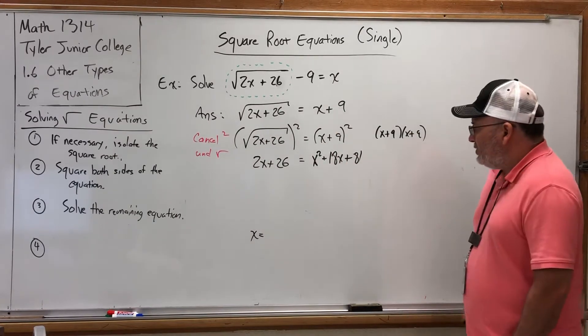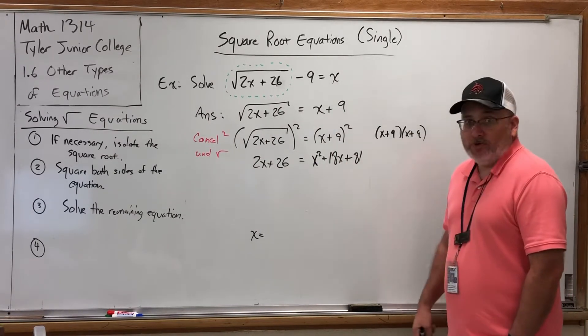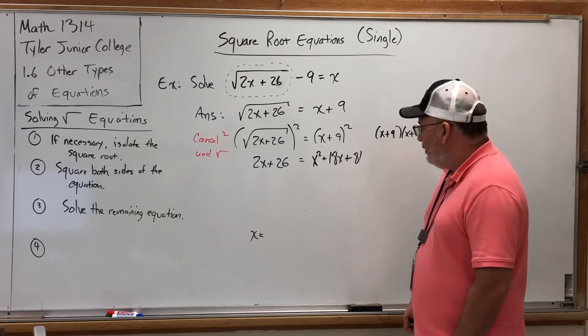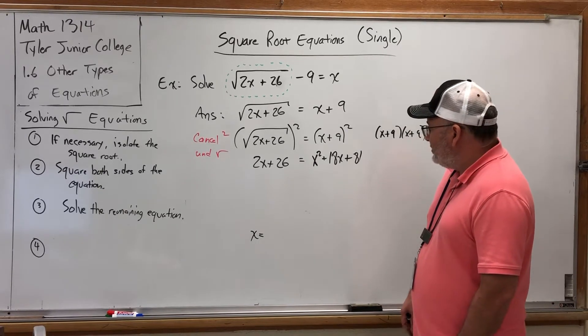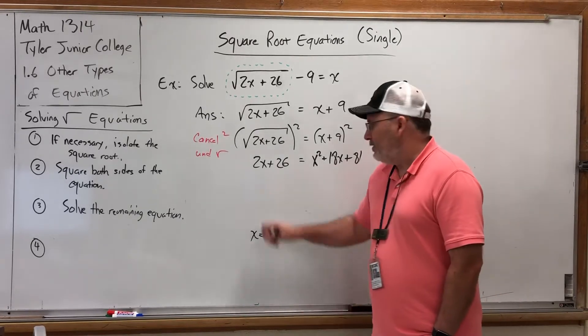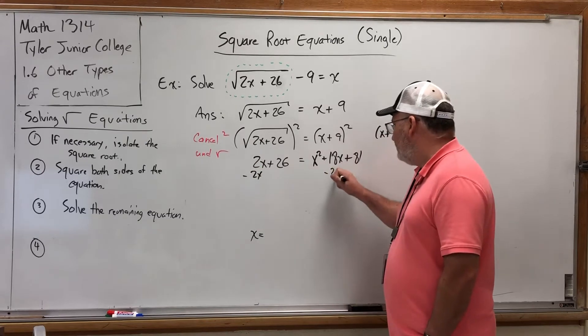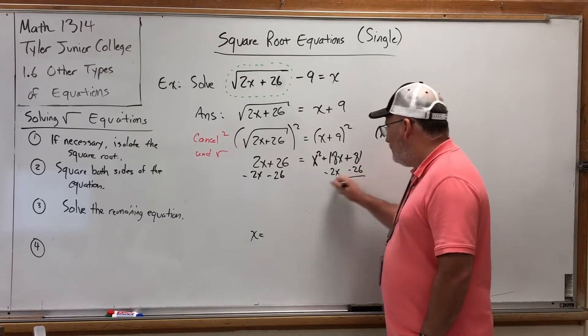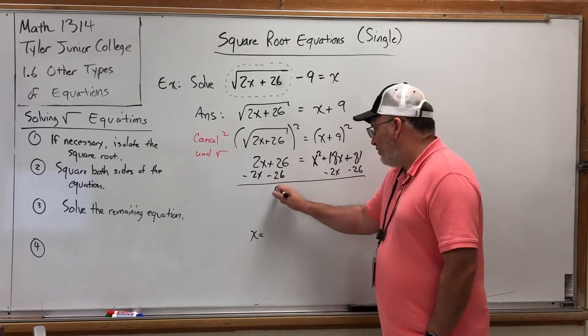Well, being a quadratic equation, you're probably going to either factor or use the quadratic formula. But either way, we should get it equal to 0. If we're going to get this one equal to 0, we should keep the x squared positive, so we'll empty out the left side. By subtracting 2x from both sides, and subtracting 26.